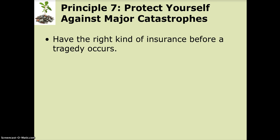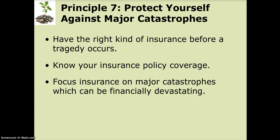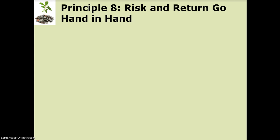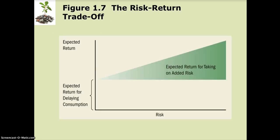Principle seven is to protect yourself against major catastrophes — insurance is a really important thing to protect your assets, and we'll talk about life insurance when we get to that chapter. Principle eight is that risk and return go hand in hand. The lower the return, the lower the risk. If you want a higher rate of return, you have to be willing to take on more risk, and we'll cover all of that when we get to the investing chapters.